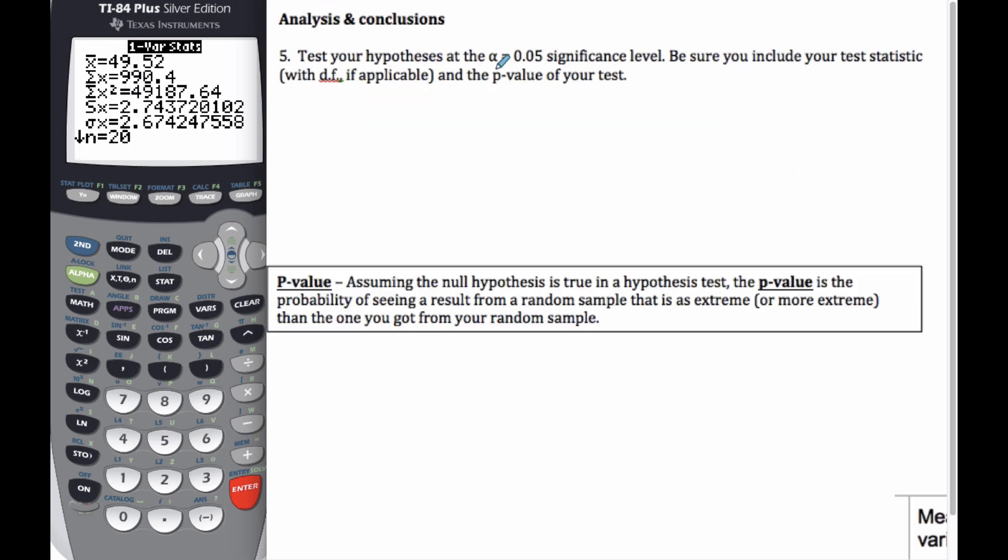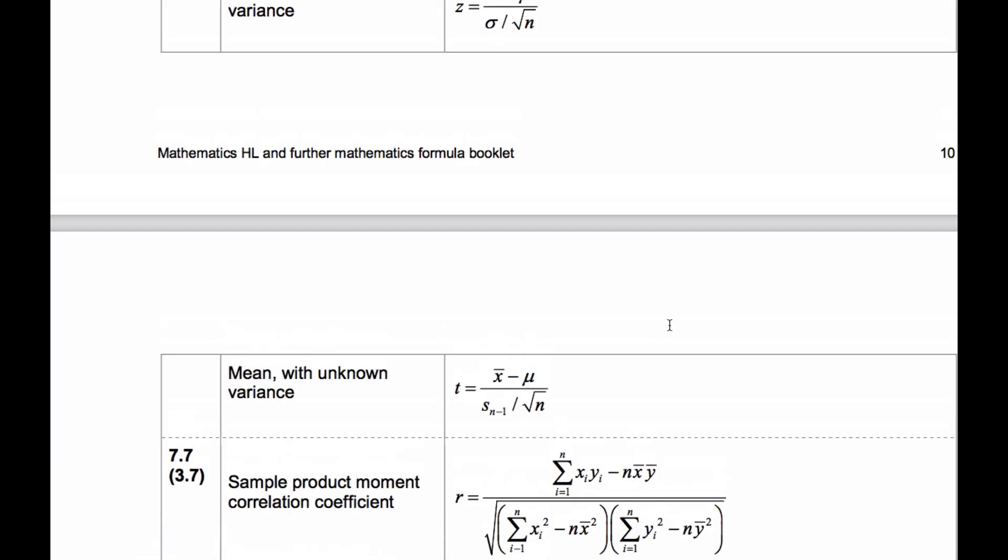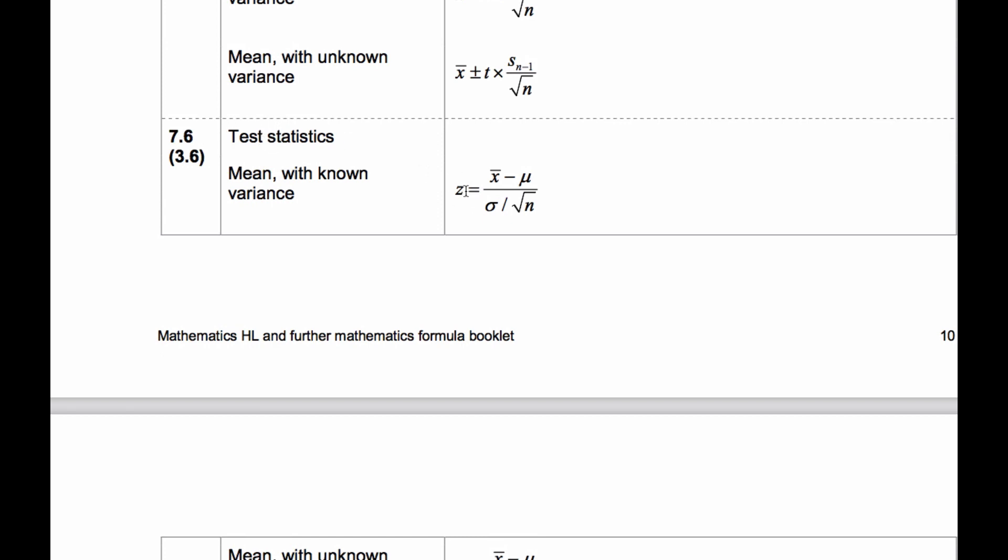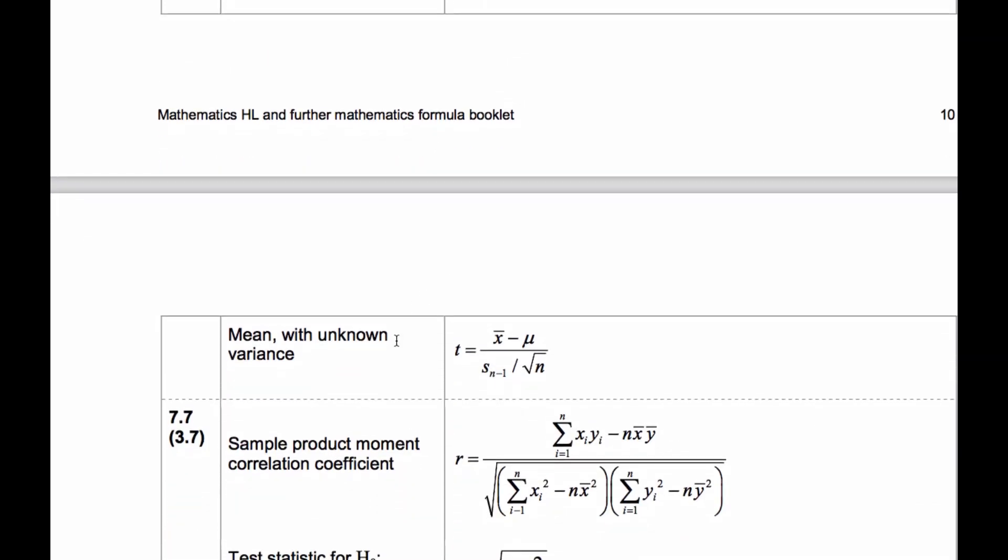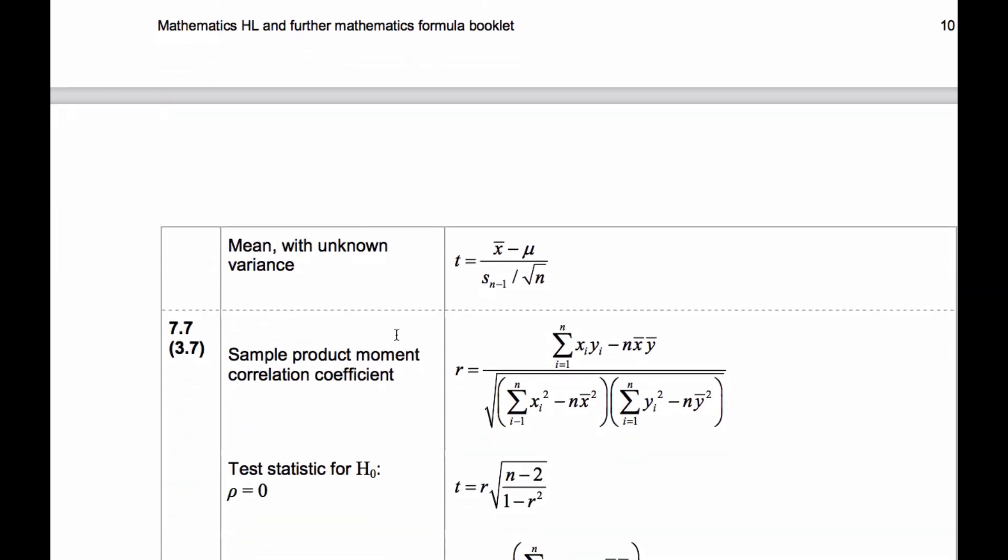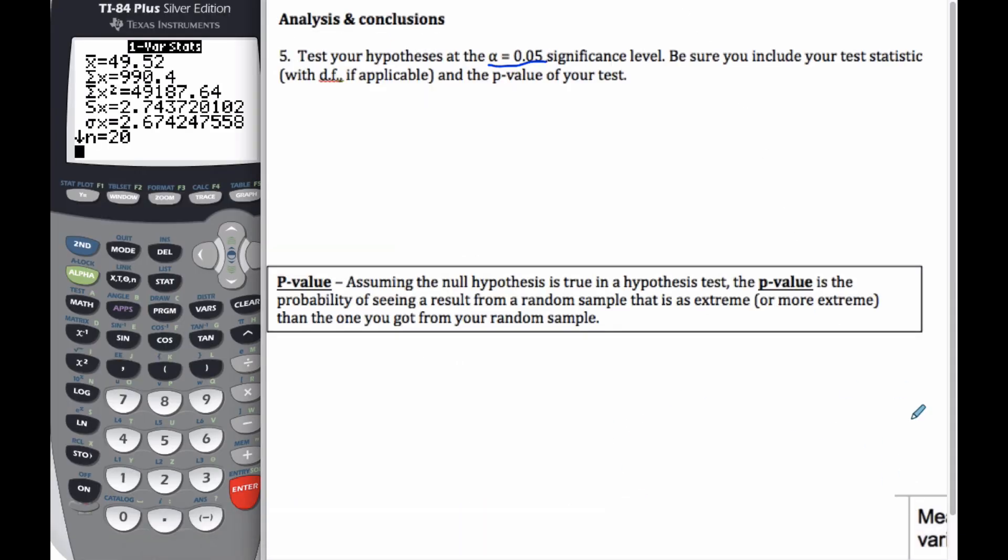So we want to now test the hypothesis when alpha is 0.05 at this significance level. Be sure to include your test statistic and your degrees of freedom applicable and the p-value of your test. Lots to do here. So if we go to our formula booklet, here's our formula booklet. Here's our test statistic Z score if we know the variance, but we don't know the variance. So we're going to go to our T statistic with the unknown variance. And when we use that statistic, which I'll pull up over here, when we use this statistic, we can see it here.